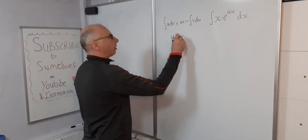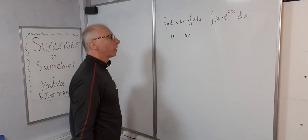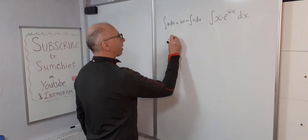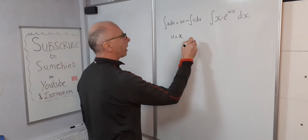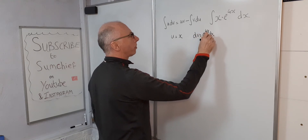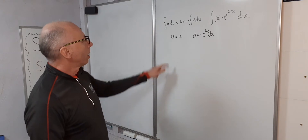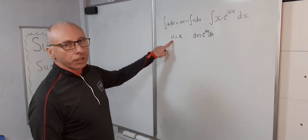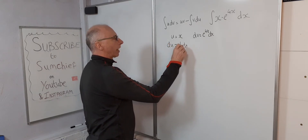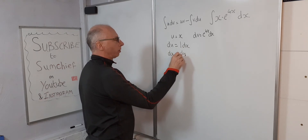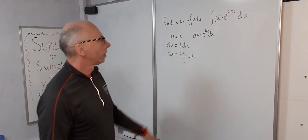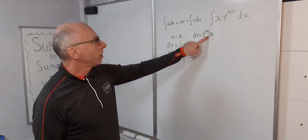So we set our parameters: u equals x, and dv equals e to the 4x dx. Now we take the derivative of u: the derivative of u equals 1, so dx equals du over 1, which is just du. Now looking at dv, which is e to the 4x dx, we need to integrate both sides.